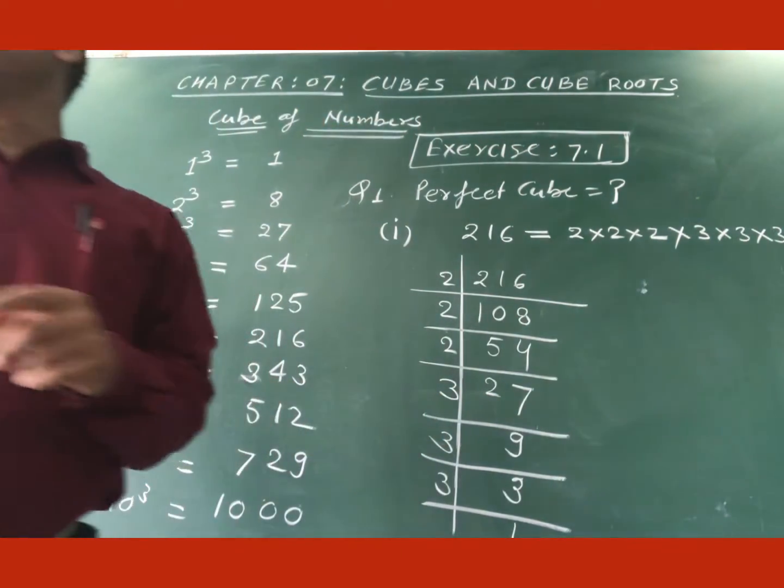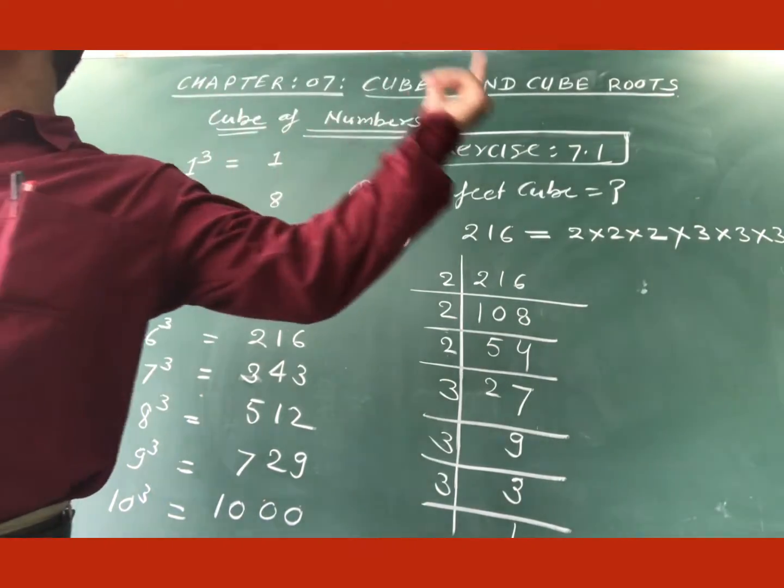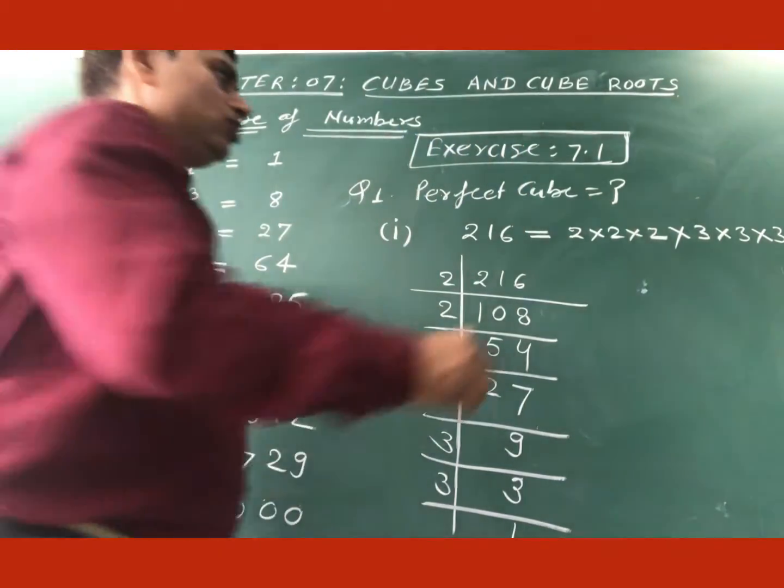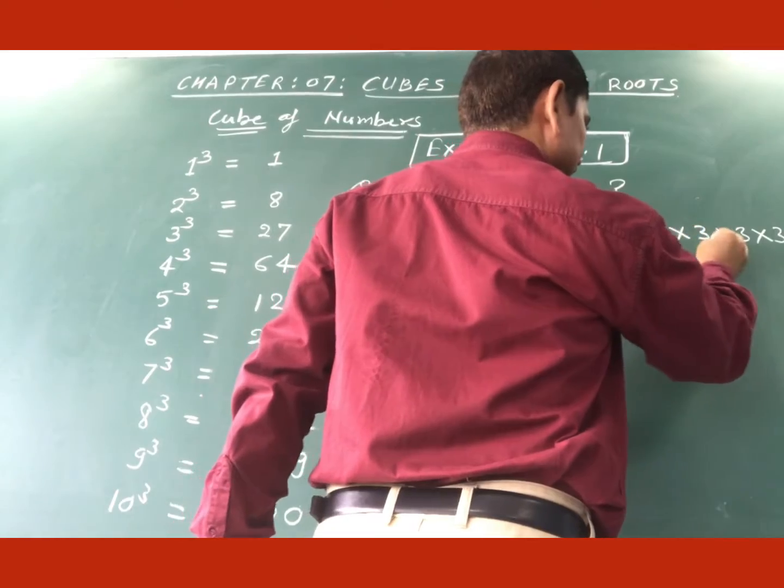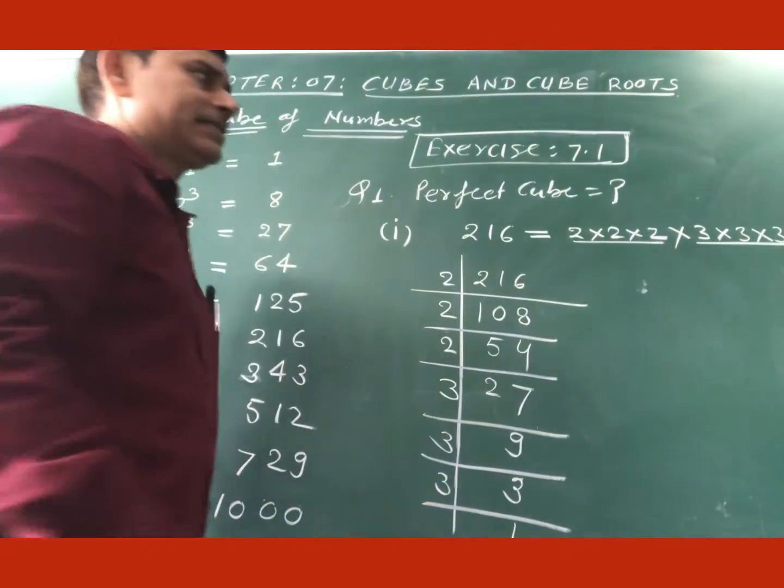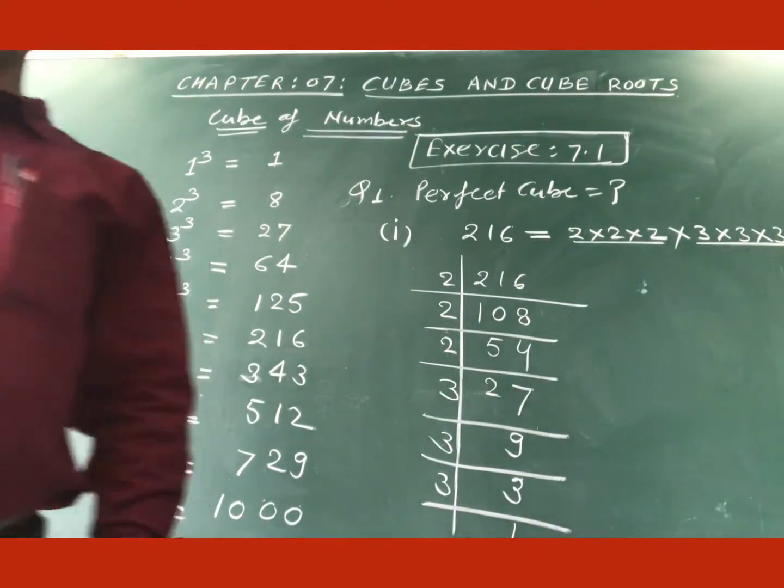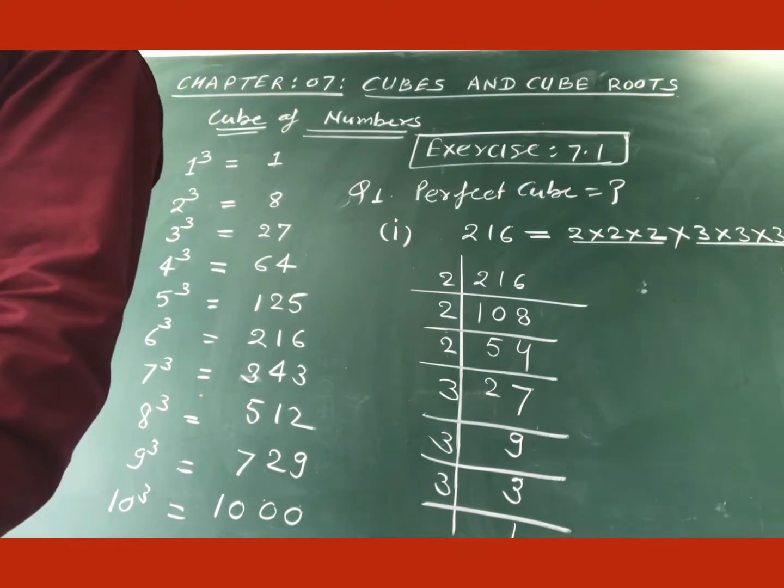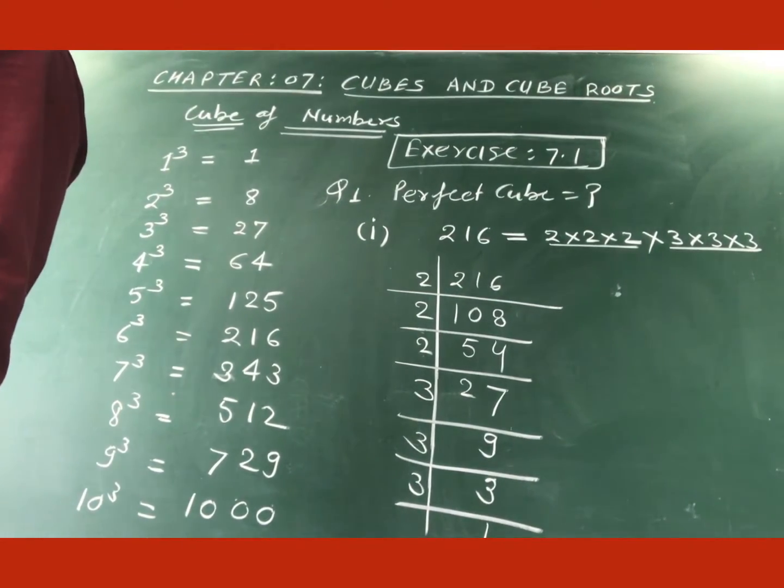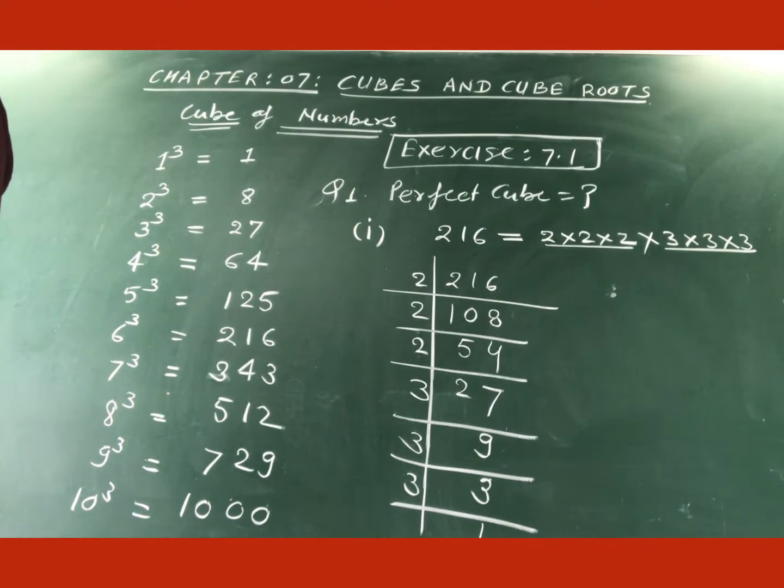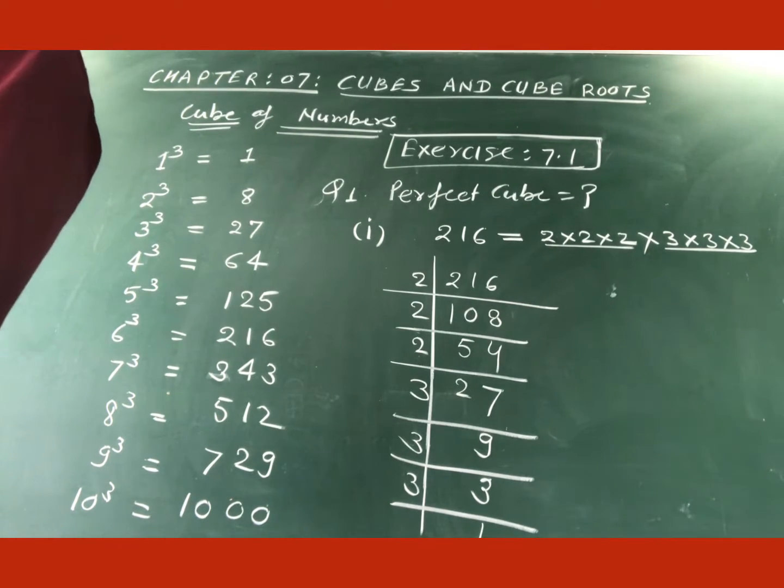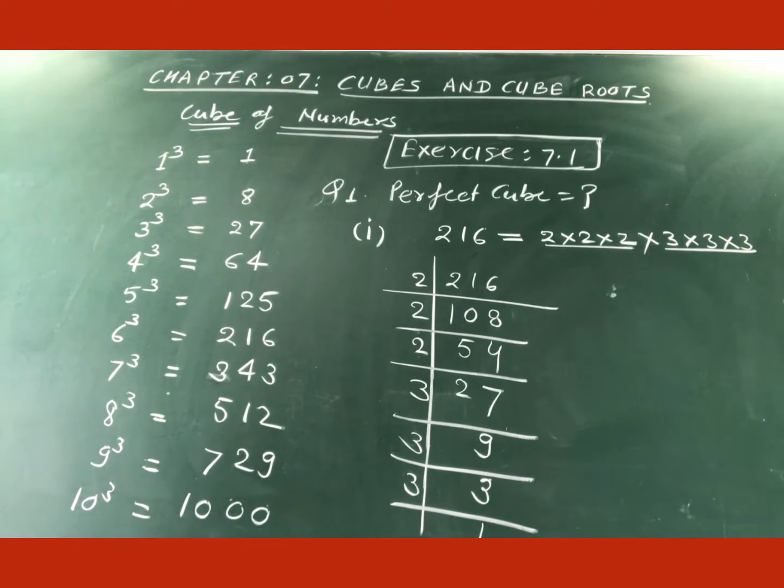So now make the triplet of these factors. You will get here 1 triplet, and here you will get the second triplet of 3. If these triplets are completed by you, then you can say that this given number is a perfect cube.